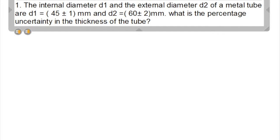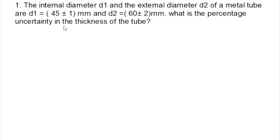Now let's see this with an example. The internal diameter D1 and external diameter D2 of a metal tube are given as D1 = 45 ± 1 mm, where ±1 indicates the uncertainty in the measured value of 45, and D2 = 60 ± 2 mm, where 2 indicates the uncertainty in D2.